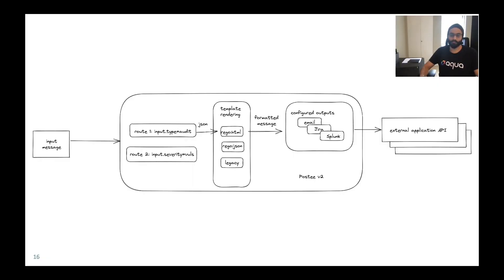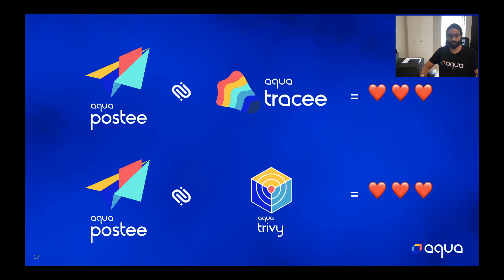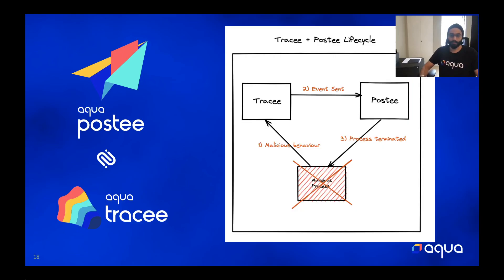As a high-level overview, Postee can be looked at from a 10,000-foot view. We all know Trivy, we all know Tracee — you all love them — and you'll be happy to hear that Trivy and Tracee both can work with Postee. In fact, it's not just limited to Tracee and Trivy; any producer of events that can send an event over to Postee can work with it.